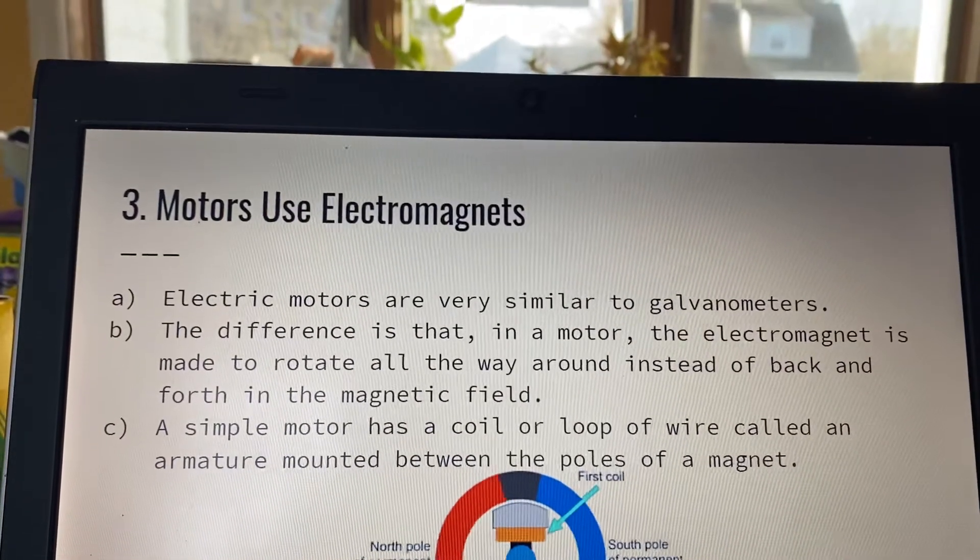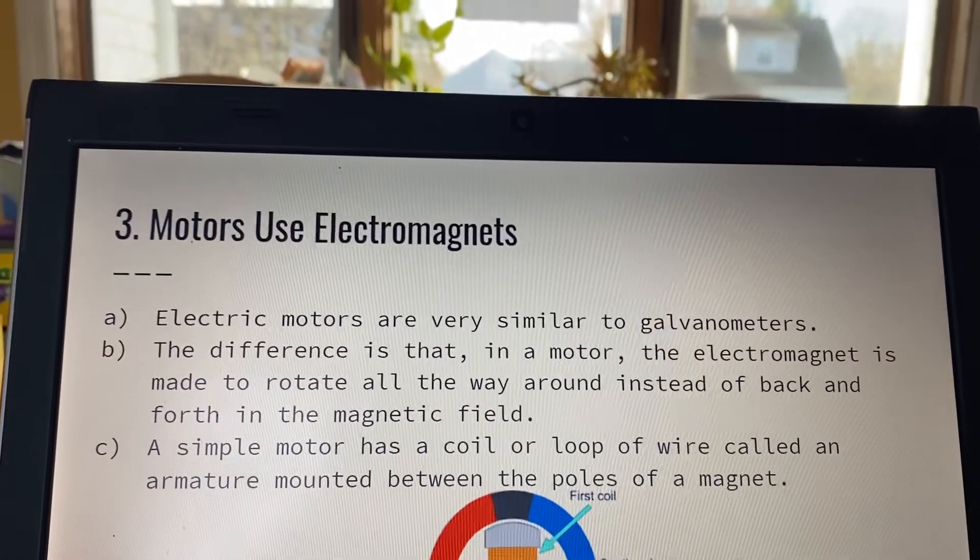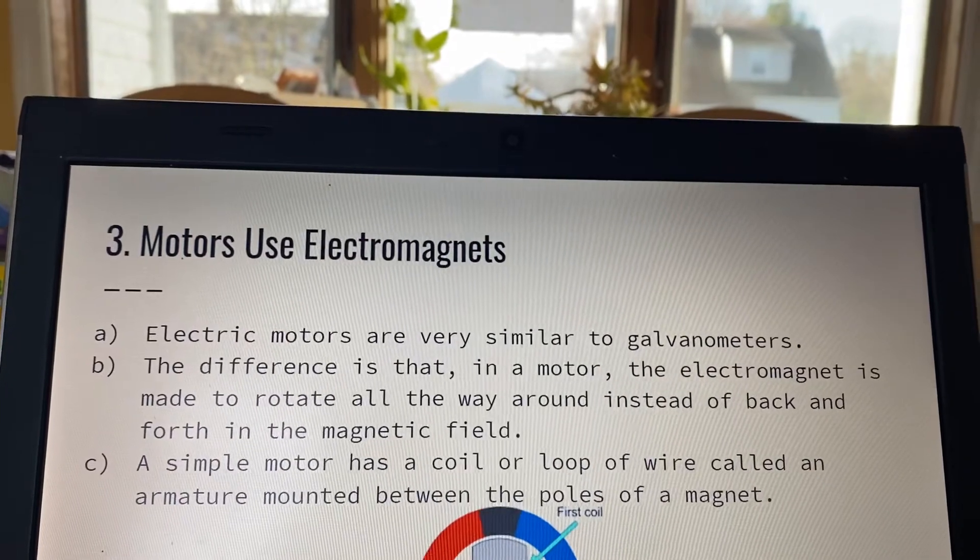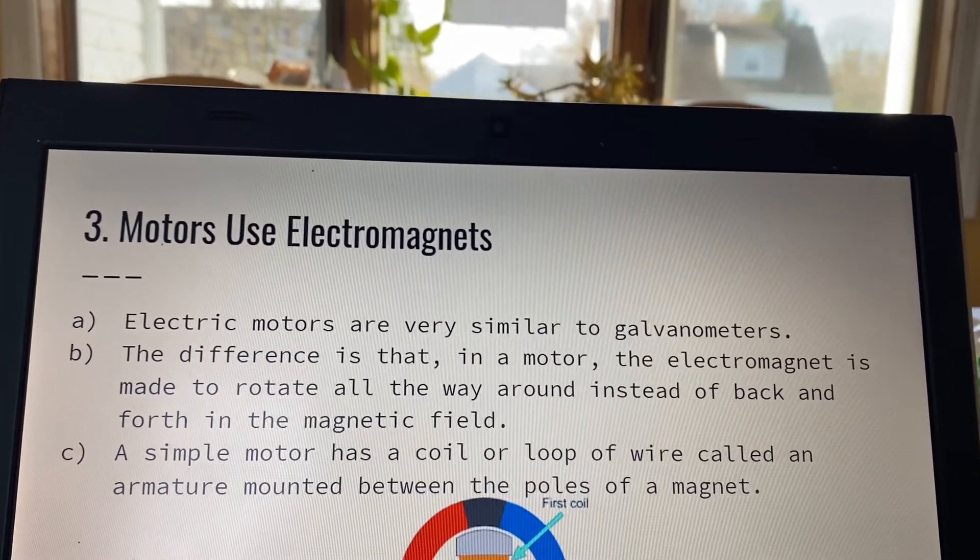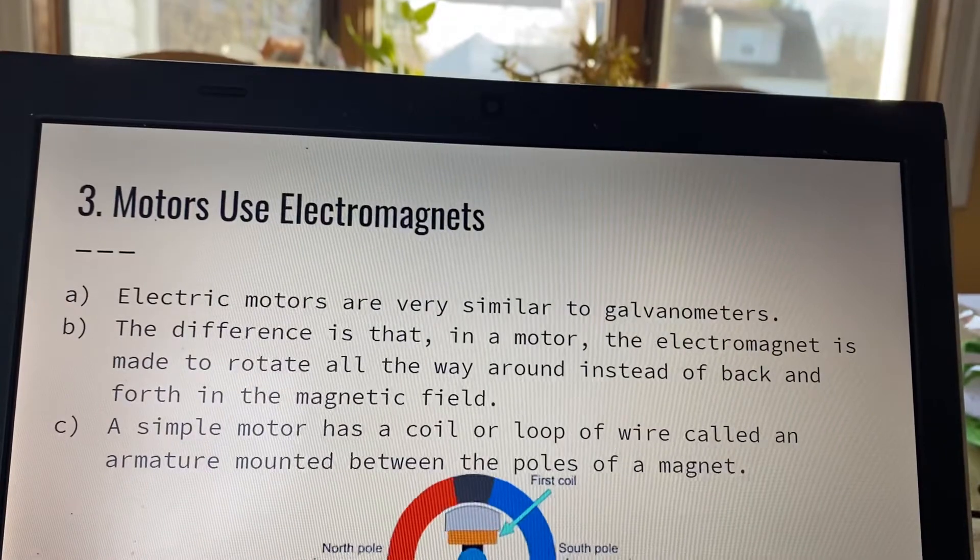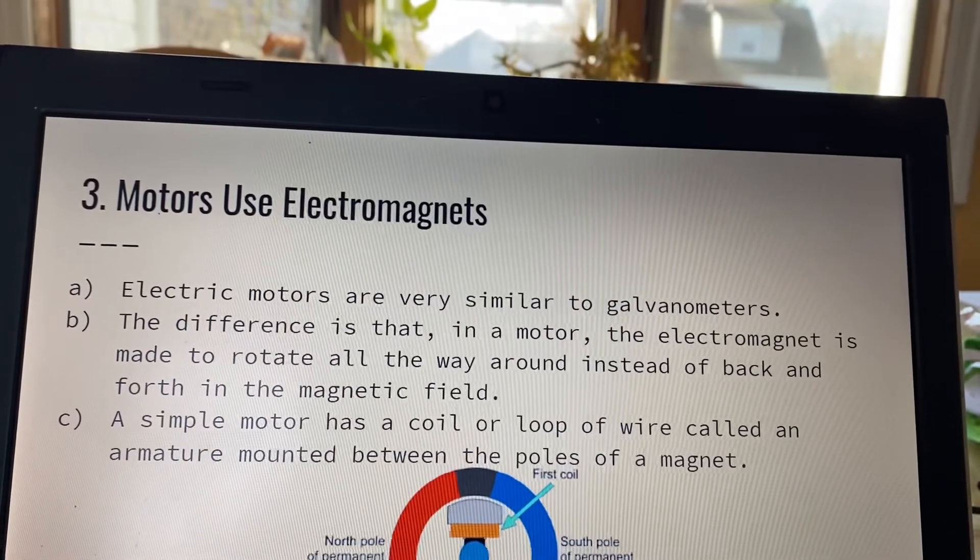Motors use electromagnets. Electric motors are very similar to galvanometers. The difference is, in a motor, the electromagnet is made to rotate all the way around instead of back and forth in the magnetic field.